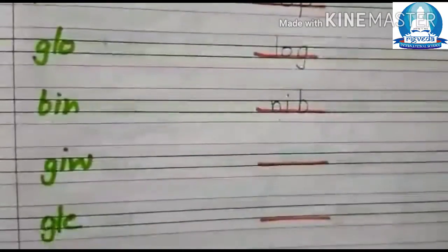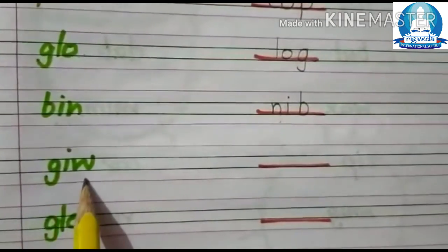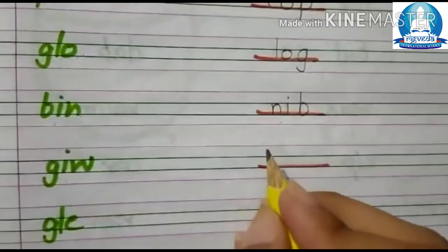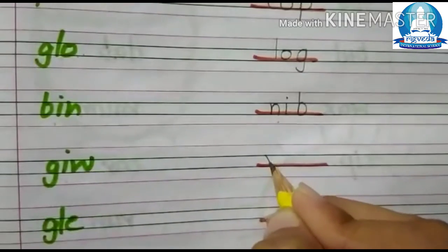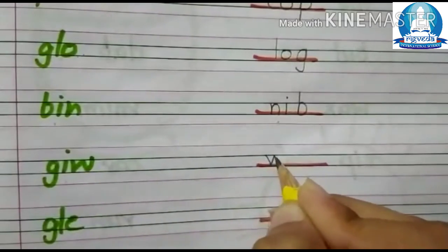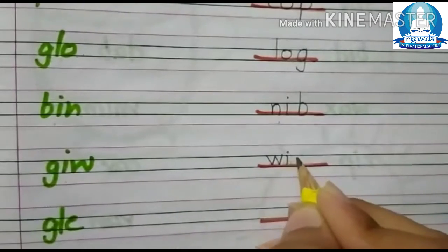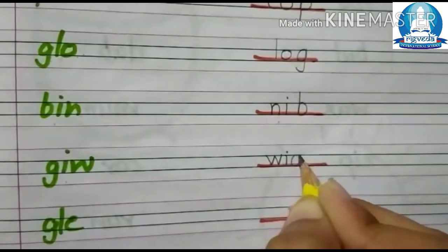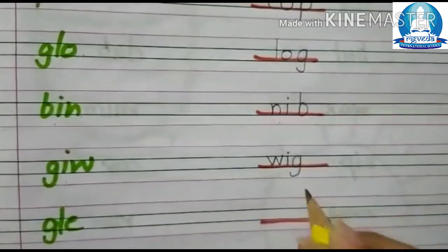Next is G, E, W. We will make W, E, G. Wig.